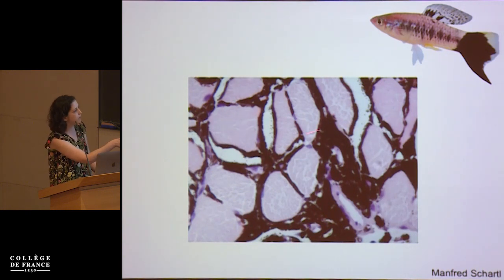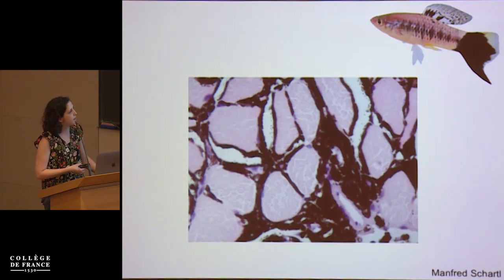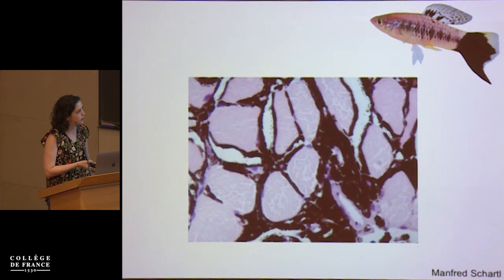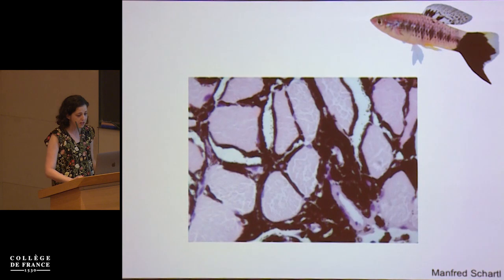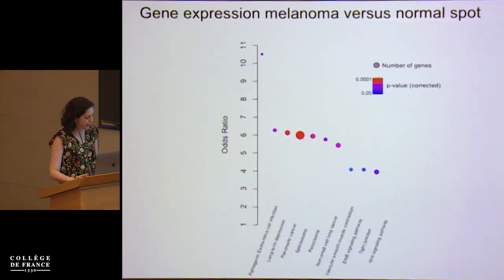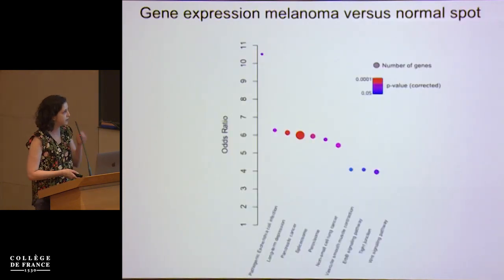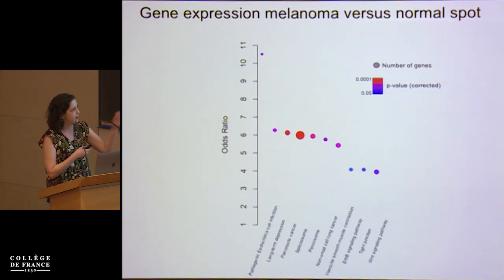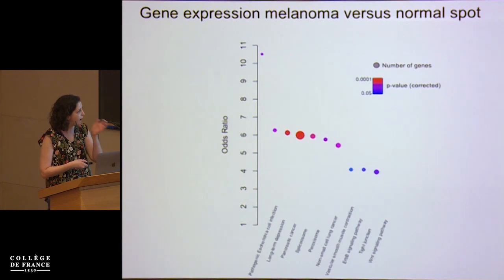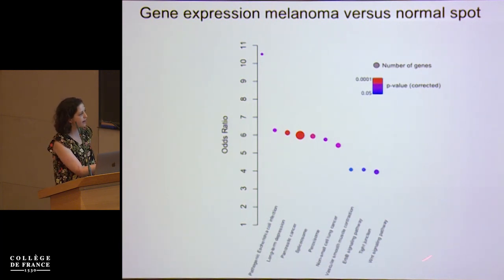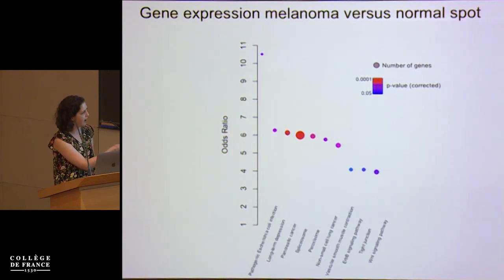Over time this becomes more extreme and you'll actually see degradation of the muscle bundles. This caused us to think that we're probably looking at a melanoma, especially given what's known in other swordtail fish. We also did gene expression comparisons for enriched pathways between individuals that had this invasive versus non-invasive phenotype of the same genetic background, and we see enrichment of many pathways known to be involved in melanoma as well as general cancer-related pathways.